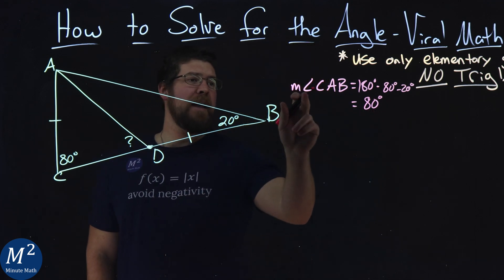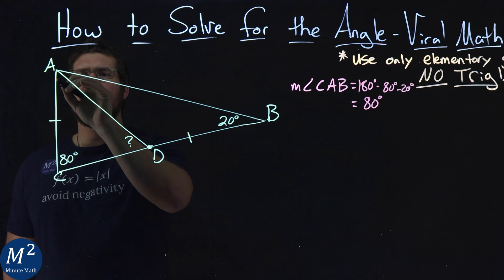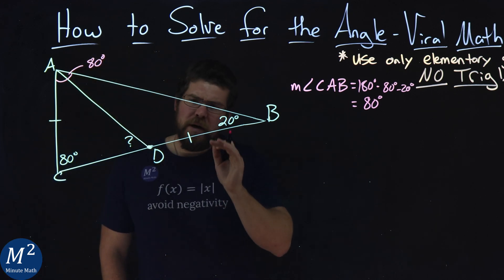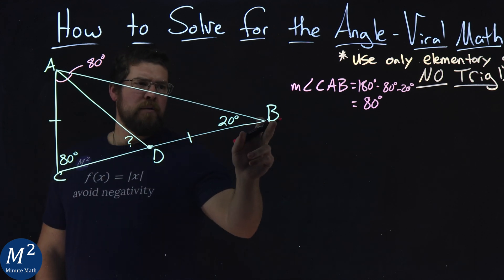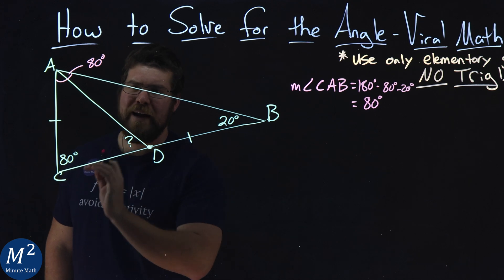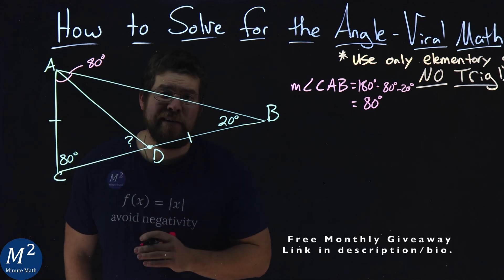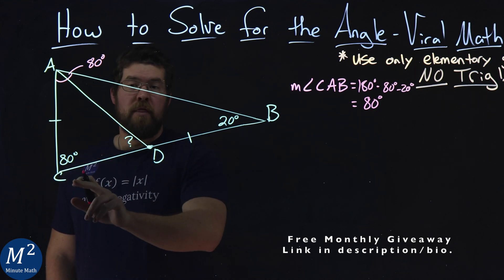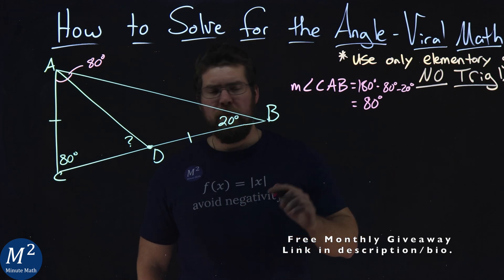So the measurement of angle CAB is 80 degrees. What does that tell us? Well, angles BCA and CAB are both 80 degrees, meaning this triangle is an isosceles triangle. The base angles are the same, making their opposite side lengths equal as well — so length CB is equal to length AB.